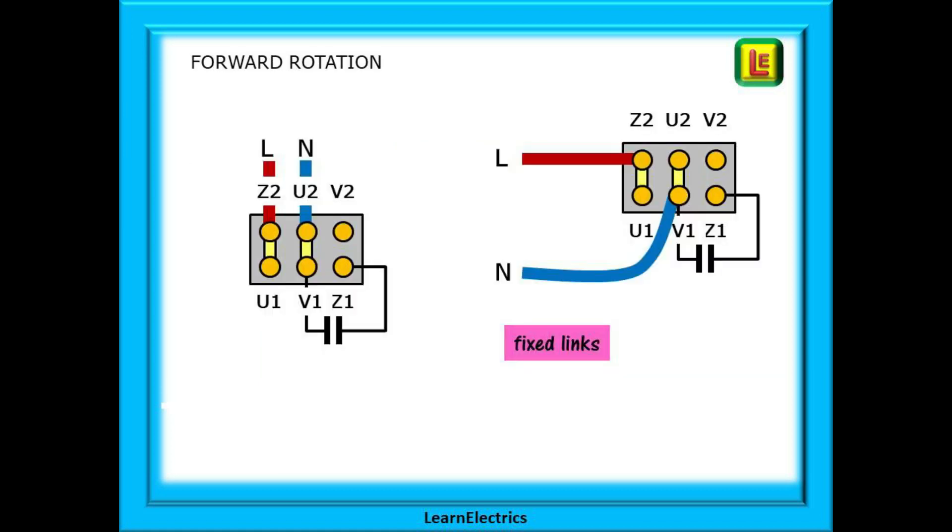You will recall from an earlier video called Single Phase Motors the position of the links on the motor block and these two drawings here show the configuration for forward direction. The only difference between them is the physical position of the neutral cable although this is electrically the same point.